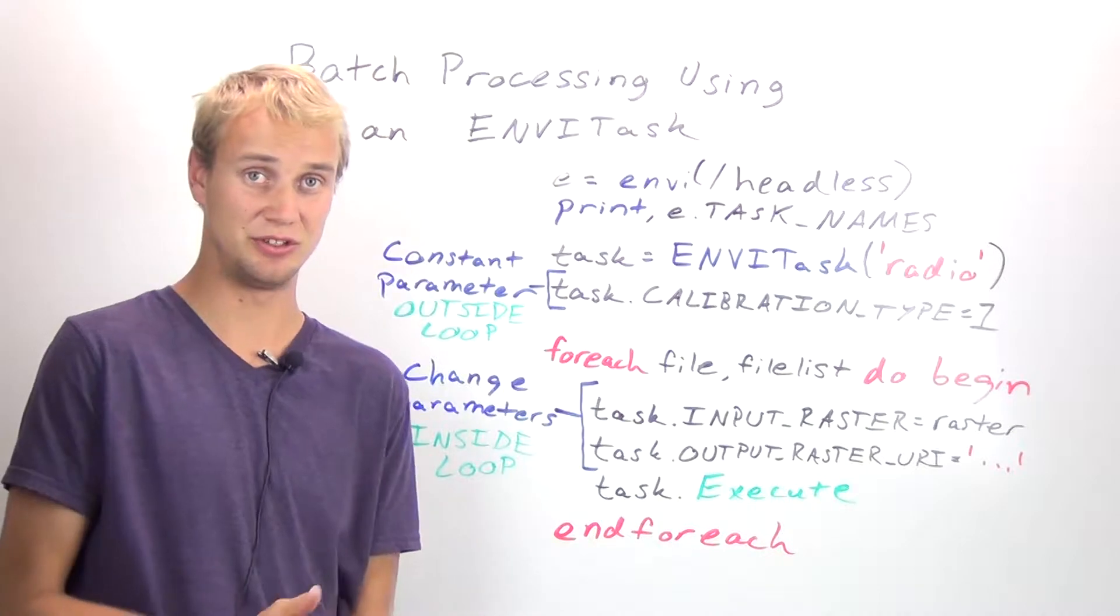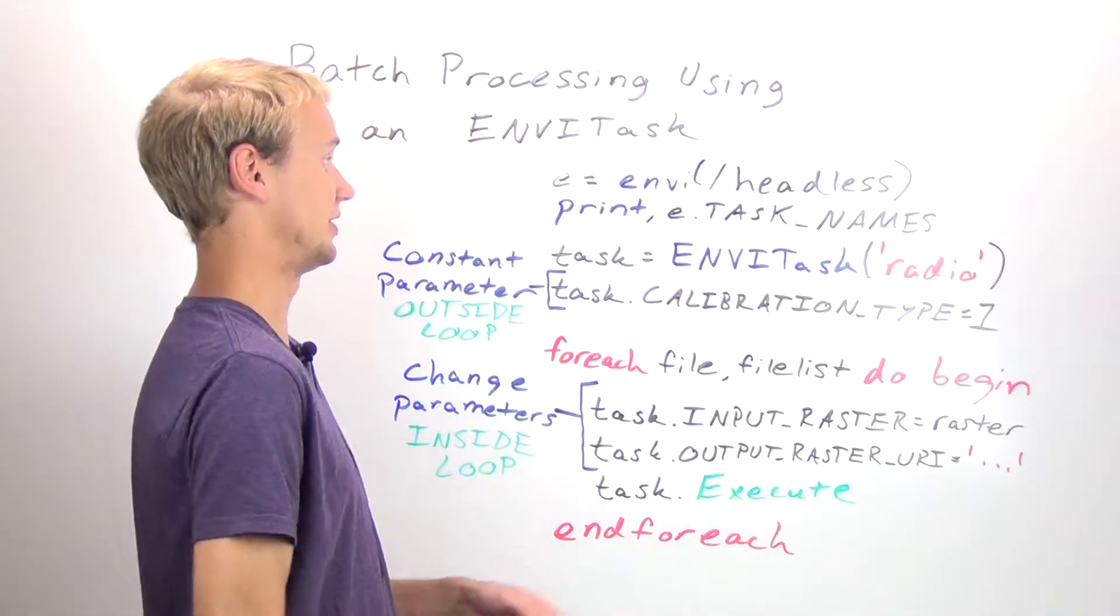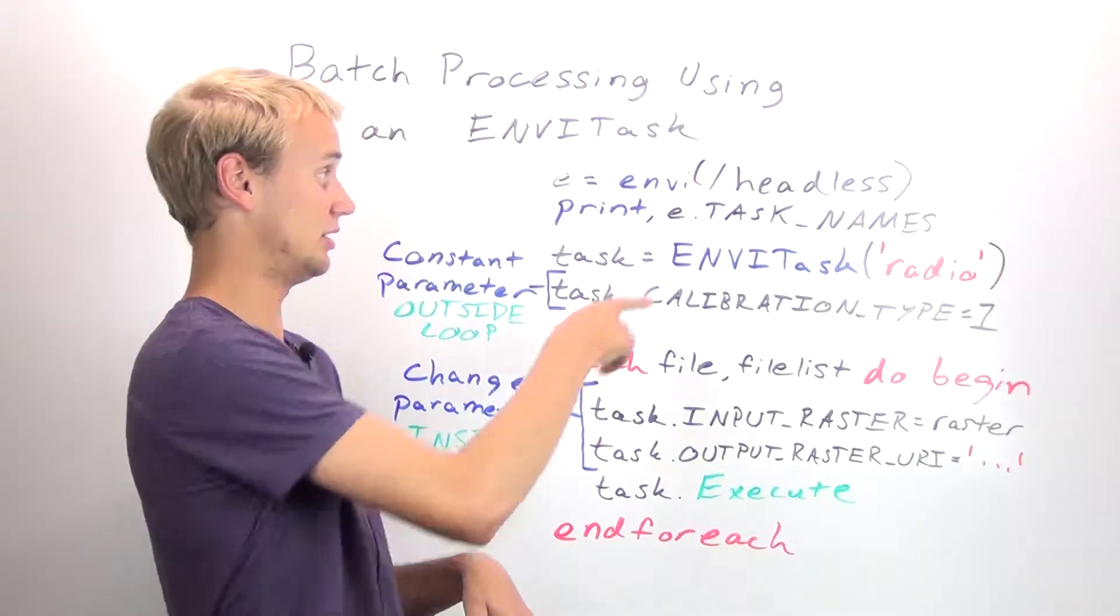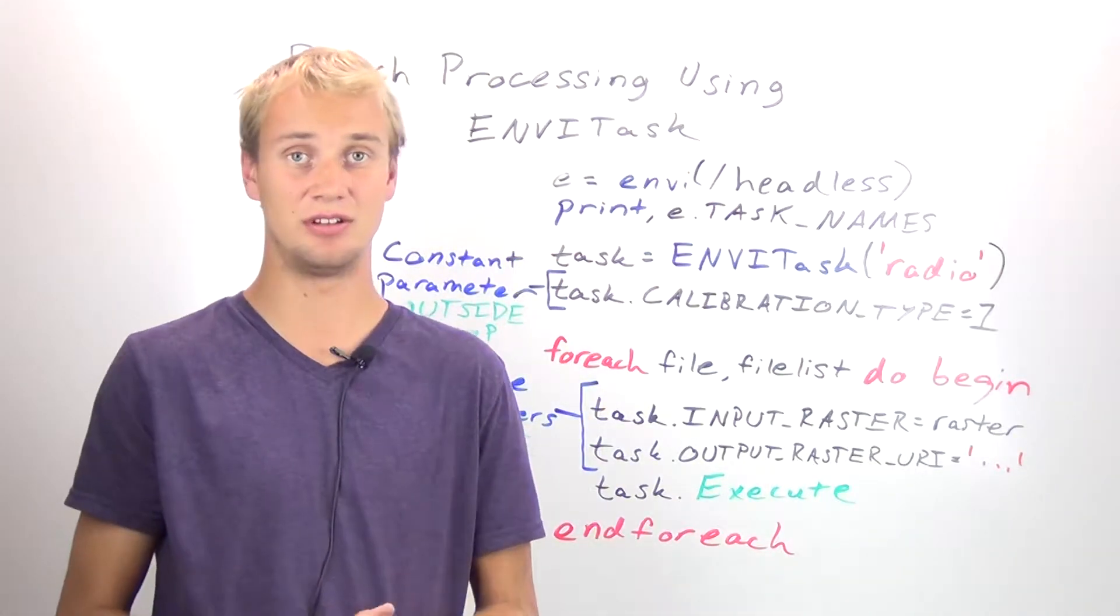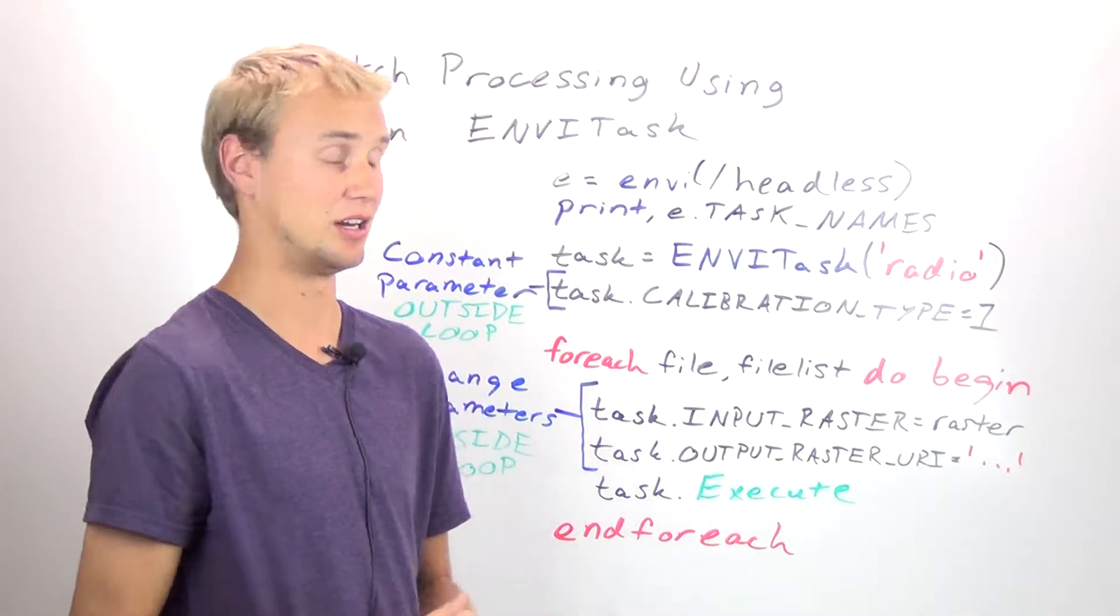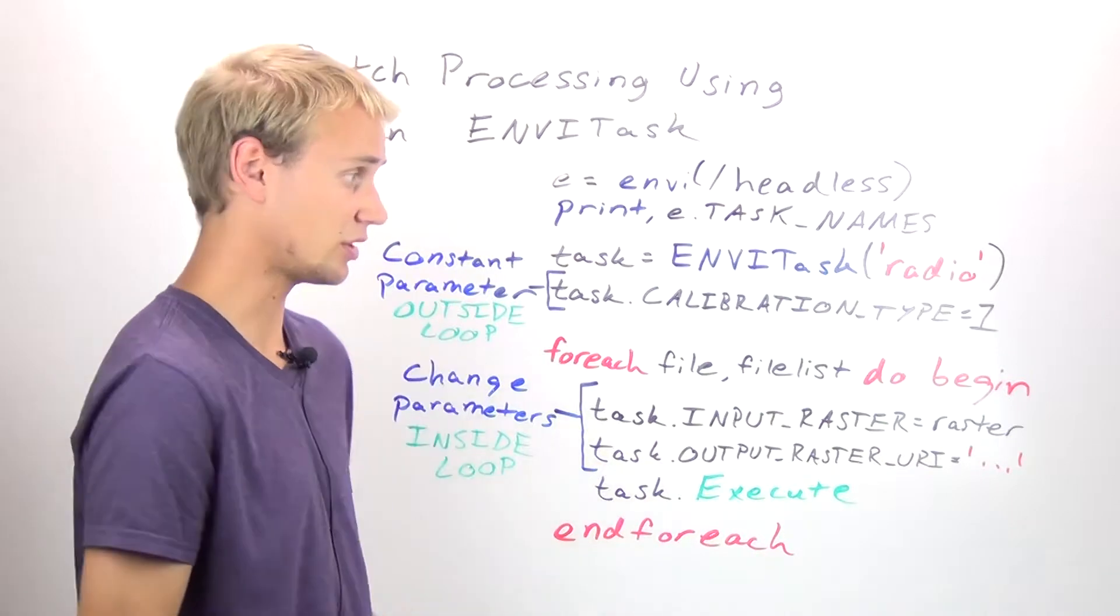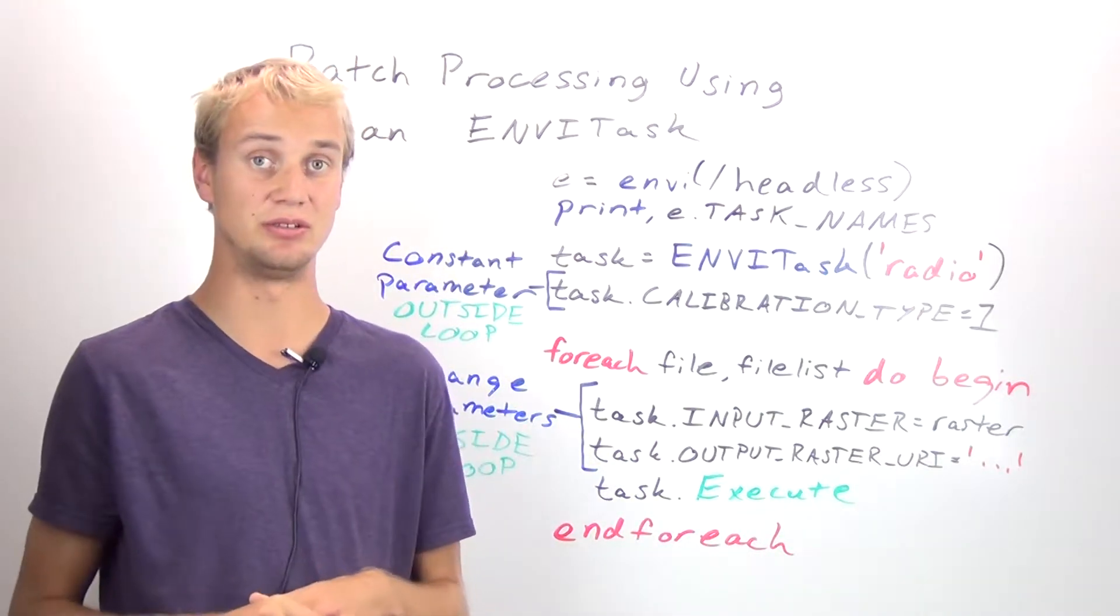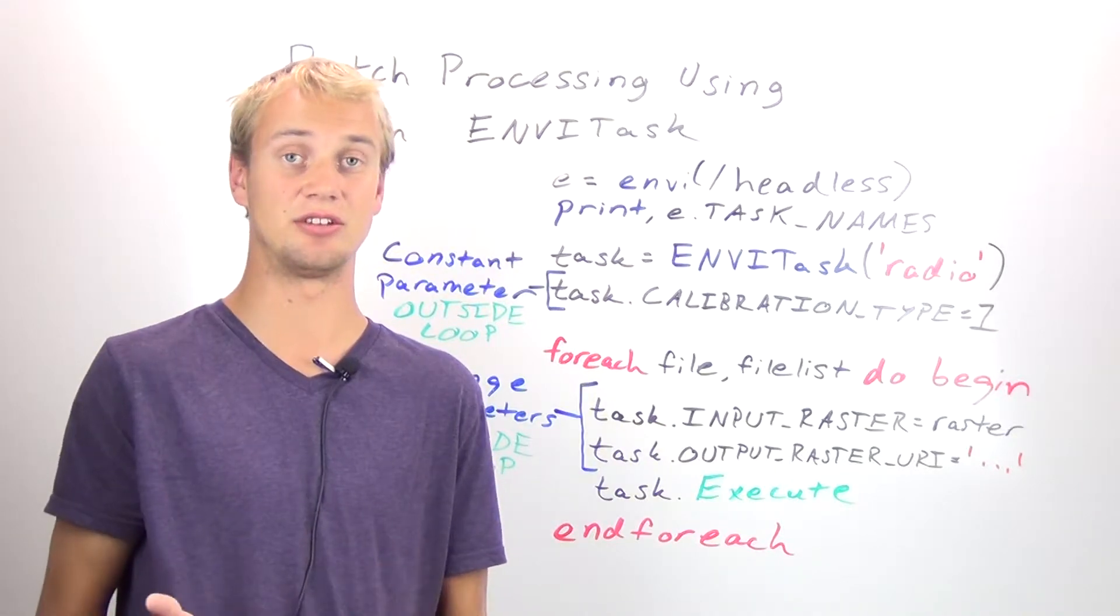The first thing that you have to do in any batch processing script is actually start Envy, but without the user interface using e equals Envy and then with slash headless. This will start Envy and you'll have all of its functionality with all its Envy tasks and different Envy do-its and everything else that you would need to access Envy's functionality on the IDL command line.